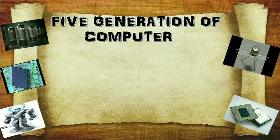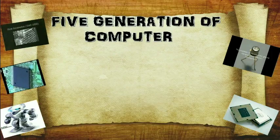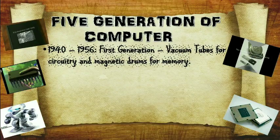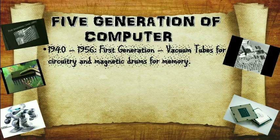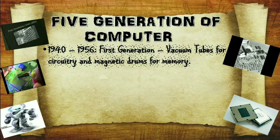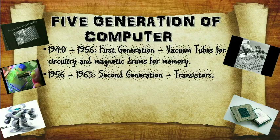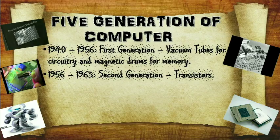You can learn about five generations of computer. The first generation is from 1940 to 1956, in which vacuum tubes for circuitry and magnetic drums for memory were used. From 1956 to 1963, the second generation, in which transistors were used.